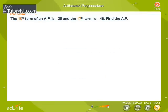Example problem: The 10th term of an AP is minus 25 and the 17th term is minus 46. Find the AP.